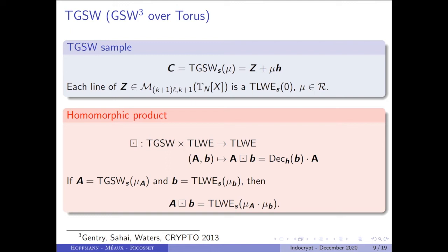To enable multiplication, we introduce TGSW samples. A TGSW sample is a matrix: you take a matrix where each row is a TLWE sample of zero and add your message encoded using a gadget matrix. Using TGSW samples, we can perform the external product — an operation between a TGSW sample and a TLWE sample. The details involve a decomposition using the gadget matrix, but at the end we get a TLWE sample encoding the product of the messages, giving us homomorphic multiplication.